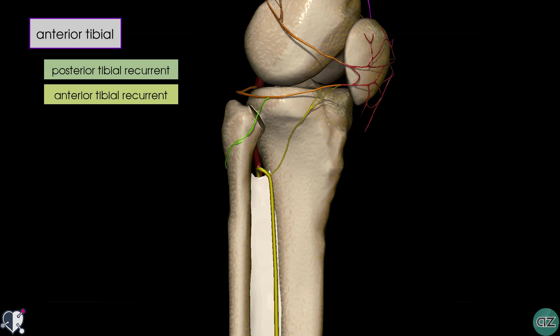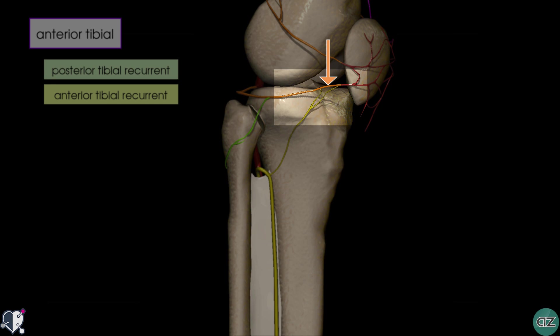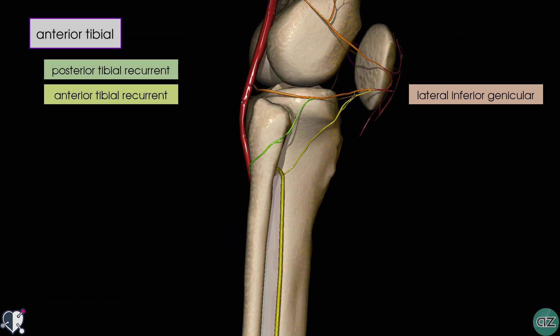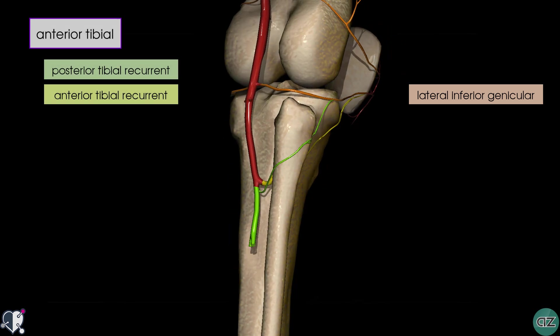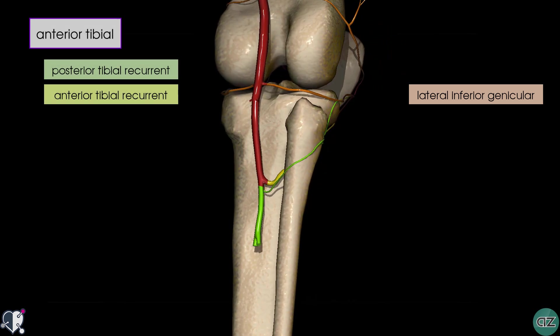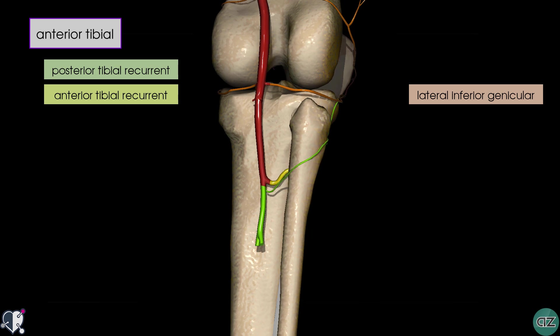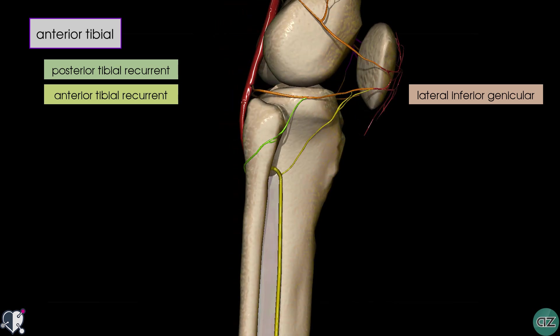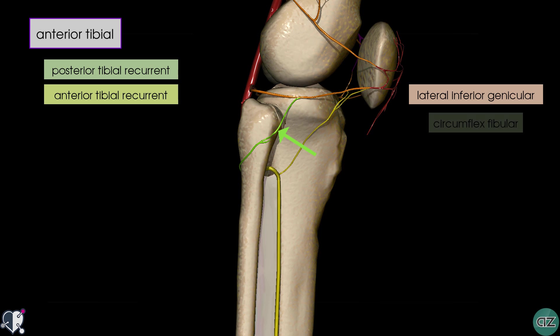I've switched to a different model which illustrates how the anterior tibial recurrent artery anastomoses with the lateral inferior genicular branch of the popliteal. Rotating the model around you can see the lateral inferior genicular coming off the popliteal artery. You can also see another branch anastomosing, which is the circumflex fibular artery of the posterior tibial artery, which I'll come back to.